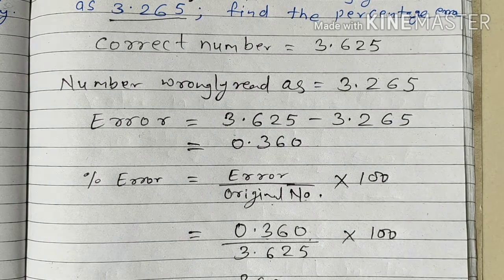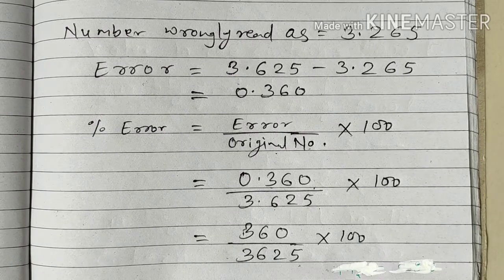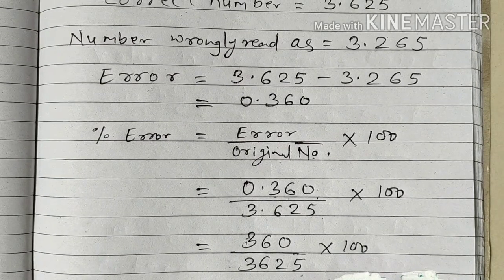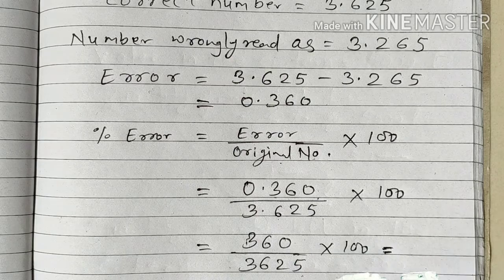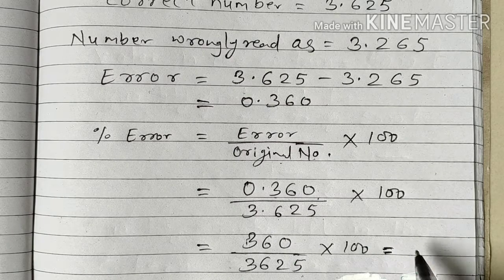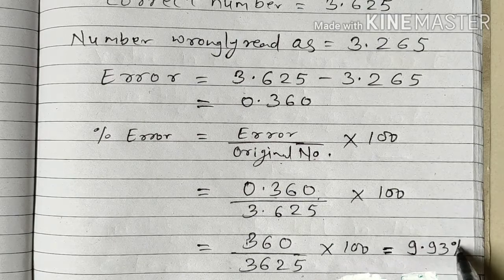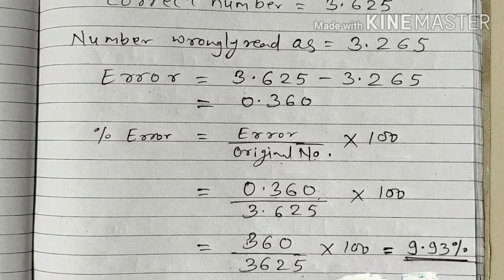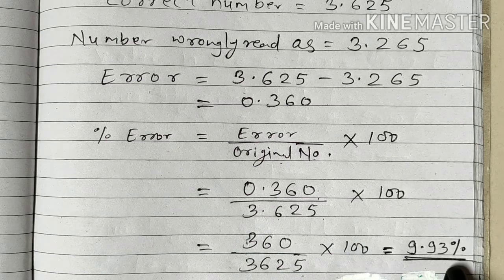We remove the decimal point and simplify. When we make the simplification, the final answer will be 9.93%. You can make a division of these two and you will get 9.93%.